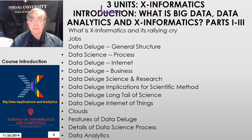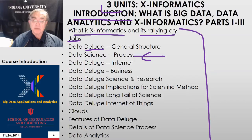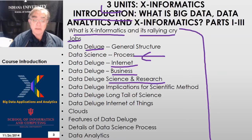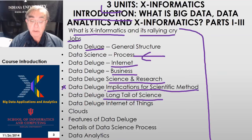Here we have three units which form the introduction to this class. Those units cover: what is x-informatics and the rallying cry, jobs, data deluge, the process of data science, various aspects of the data deluge, the internet, lots of business applications, the data deluge for science and engineering, and the implications of the data deluge for the scientific method — which is what was called the fourth paradigm on the previous slide. Then we have the so-called long tail, which is not just true for science.